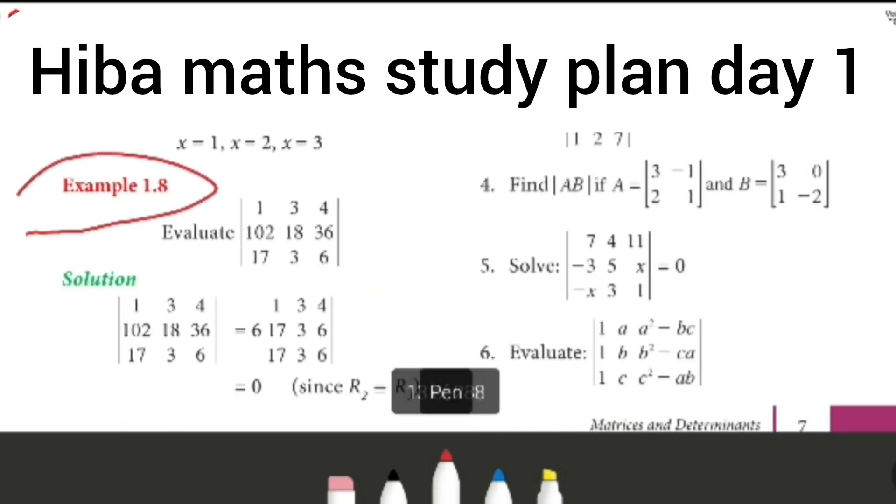Next is 1.8. This is the numbers. In the numbers, there is a common 6 value in the second row. 6 is multiple. If the two rows are equal, the full matrix value is 0.